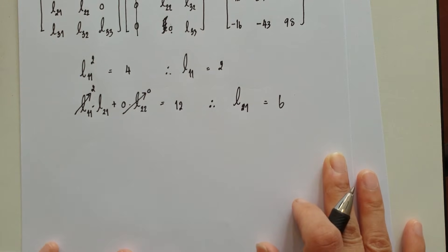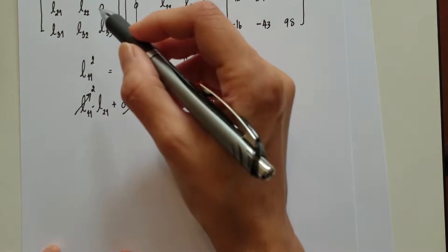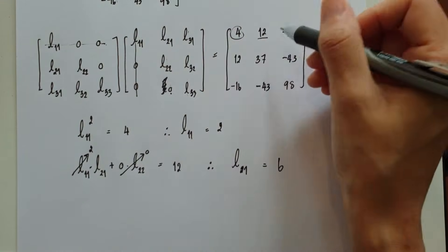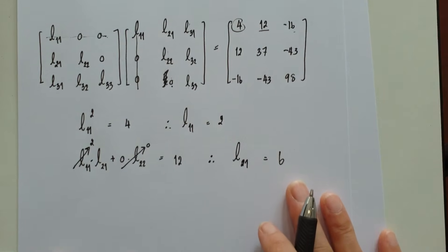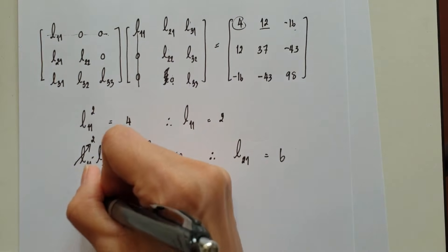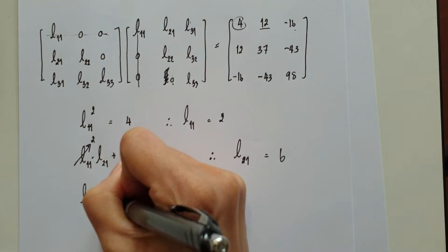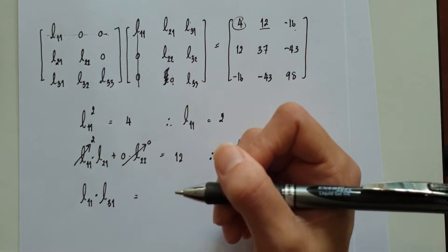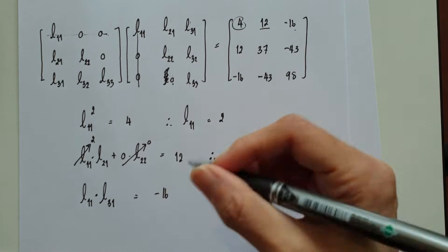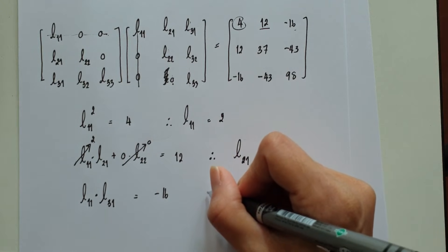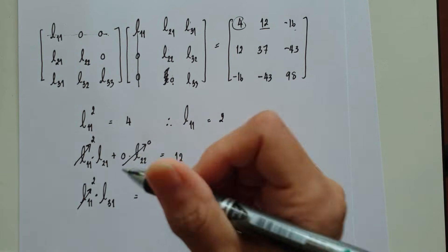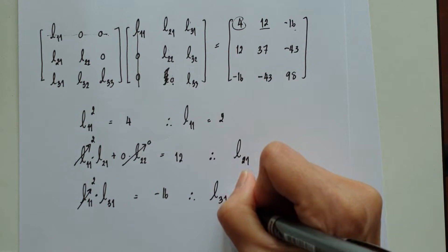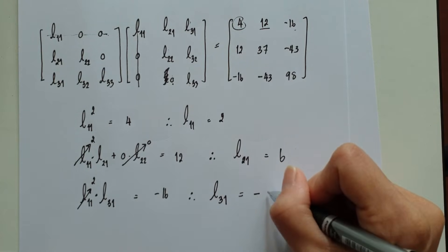Next, multiplying the first row with the third column, we get minus 16. So L11 times L31 equals minus 16. Since L11 is 2, L31 equals minus 8.